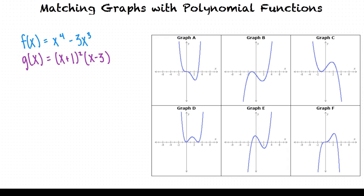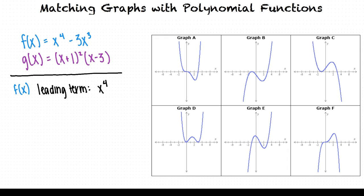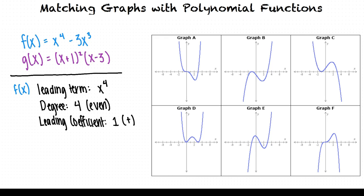We notice that the leading term is x to the fourth because this is the term with the highest degree. So f has degree four, which is even, and a leading coefficient of one, which is positive. Therefore the graph of f will have ends that point in the same direction and upwards. So let's eliminate any graphs with ends that point in opposite directions or that point in the same direction but downward.